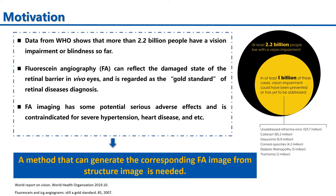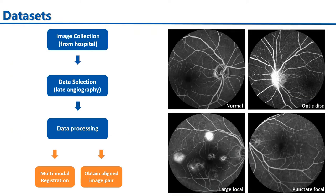Before introducing the proposed method, I want to introduce our dataset first. The dataset used in this work was collected from a hospital and captured using specialized HRA equipment, so we call this dataset the HRA dataset. This dataset contains normal FA images and FA images with three common types of leakage: optic disk leakage,